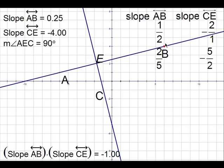And the slope of line CE, negative 4, which we will write as negative 4 over 1. And the measure of angle AEC stayed at 90 degrees.